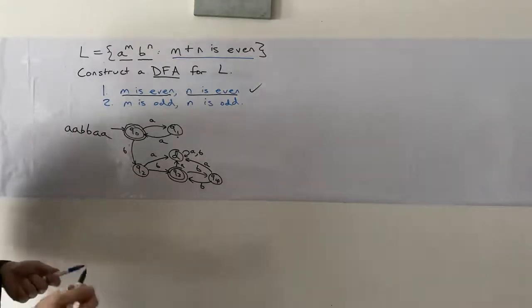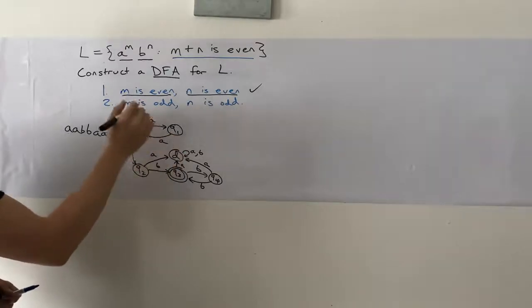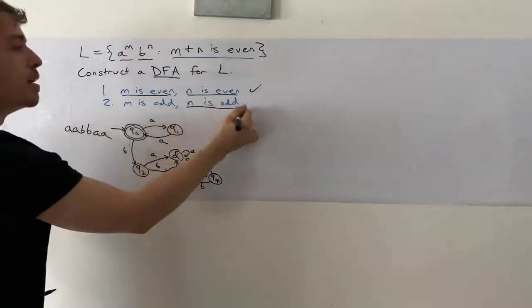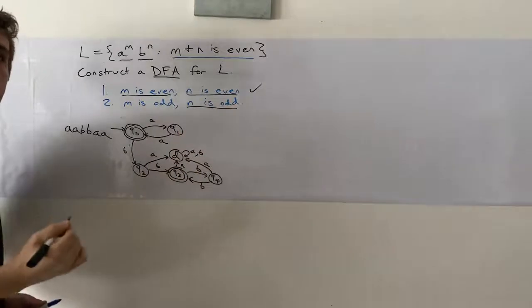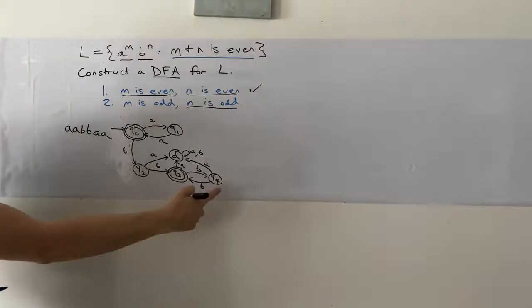Then we have to read an odd number of B's. So one thing to keep in mind is if we have an odd number of B's, that means we have at least one B.